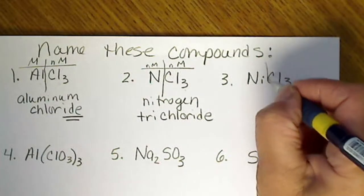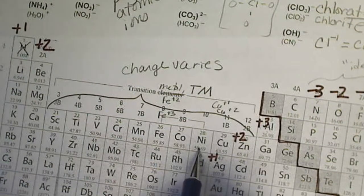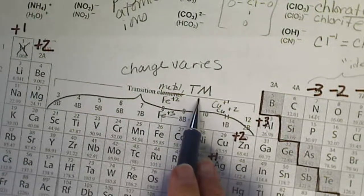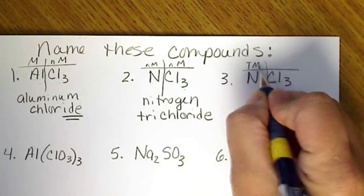This one, we draw a line after the first atom. Nickel is a transition metal. We find it on the periodic table. That's when we realize it's going to need a Roman numeral. So that's transition metal, non-metal.